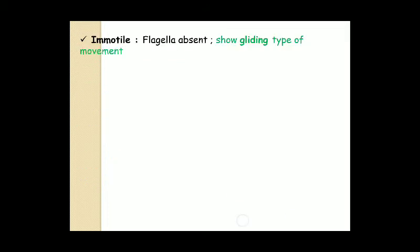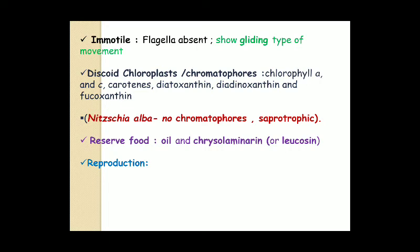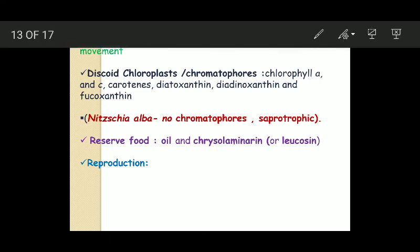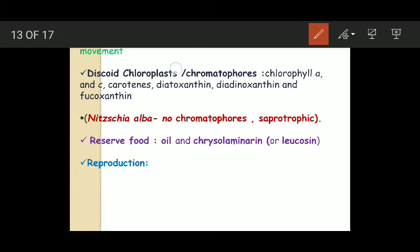Now their motility. Are they motile or immotile? The diatoms are immotile because they lack flagella. Flagella are absent, but they show some sort of gliding movement. Now their chloroplasts. The chloroplasts found in diatoms are discoid and contain chlorophyll A, chlorophyll C, carotenes, diatoxanthin, diadinoxanthin, and finally fucoxanthin.